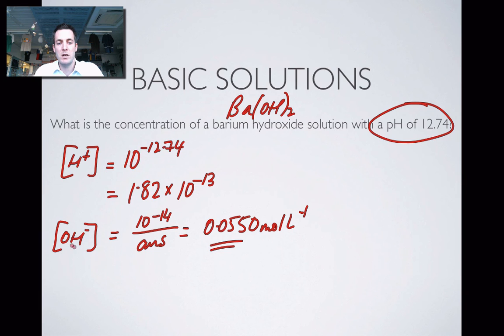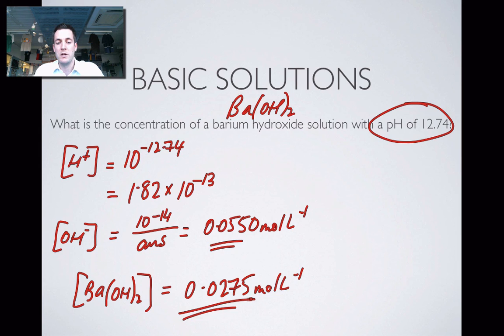Because the concentration of OH- is not the same as the concentration of barium hydroxide. Because I've got two hydroxide ions here, the concentration of barium hydroxide is going to be half the concentration of OH- ions. Because I need two of them to make one of these. So that's just going to be half of that value, and that's 0.0275 moles per liter. And there's the final answer.